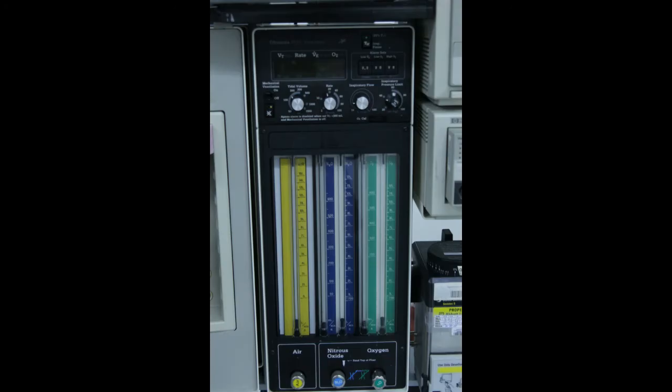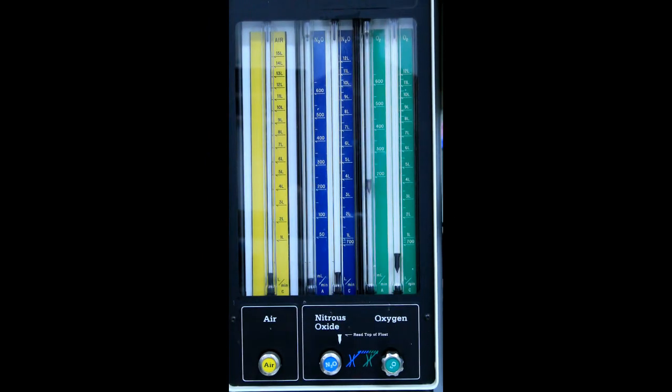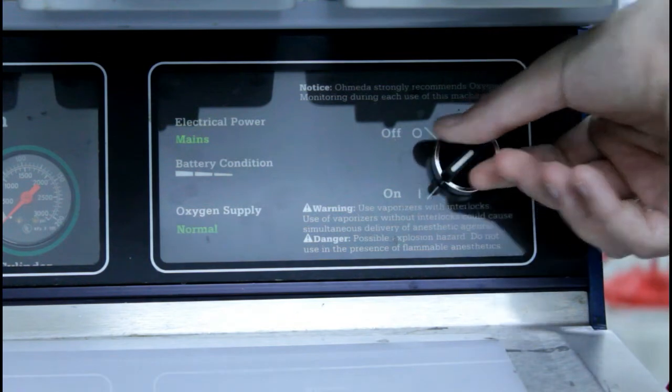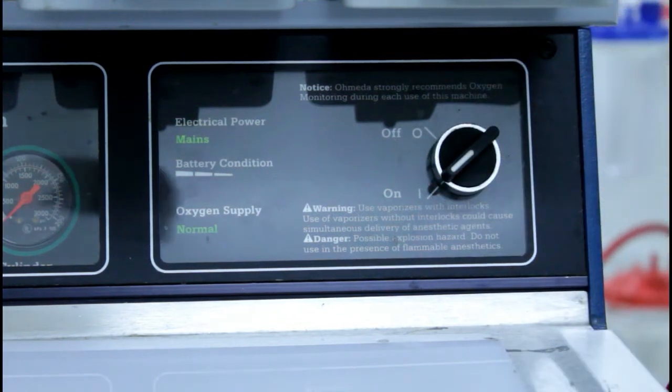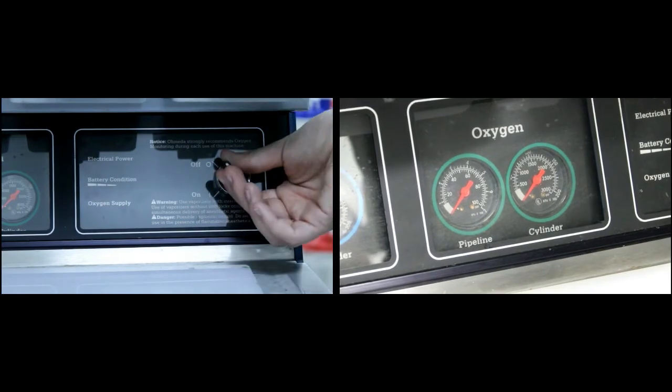The function of the flow meters is to measure the amount of each gas that is being introduced to the anesthesia circuit, and should not be mistaken for measuring the amount of vaporized anesthetic. When the system is plugged in to the central source, the pressure readings on the flow meters all go up. When the machine is turned on, the oxygen reading goes up to about 250 mL per minute and will not drop below this level so that a hypoxic mixture is not introduced.